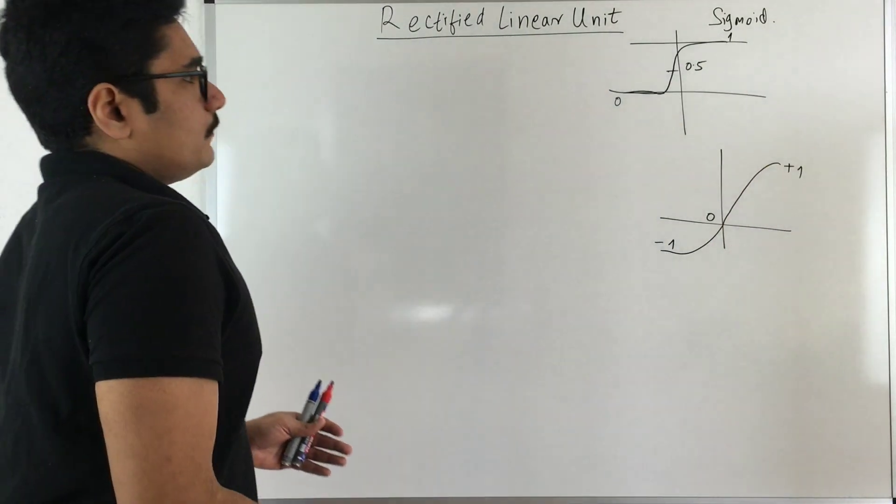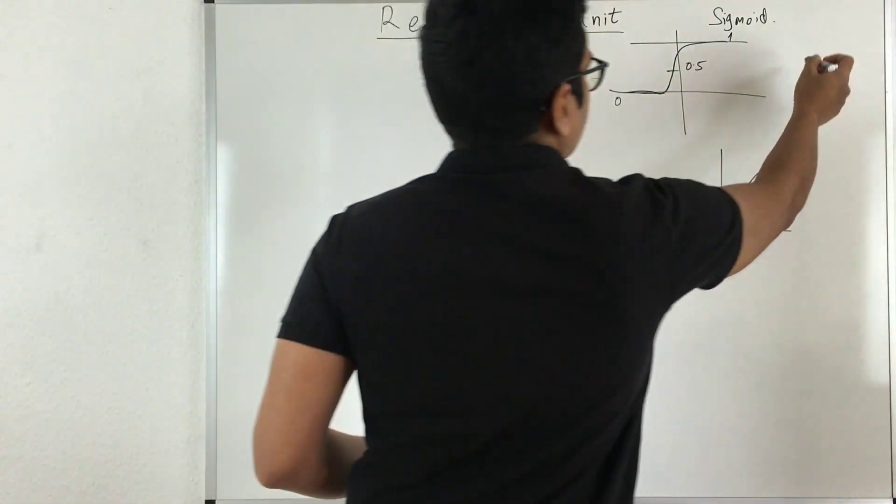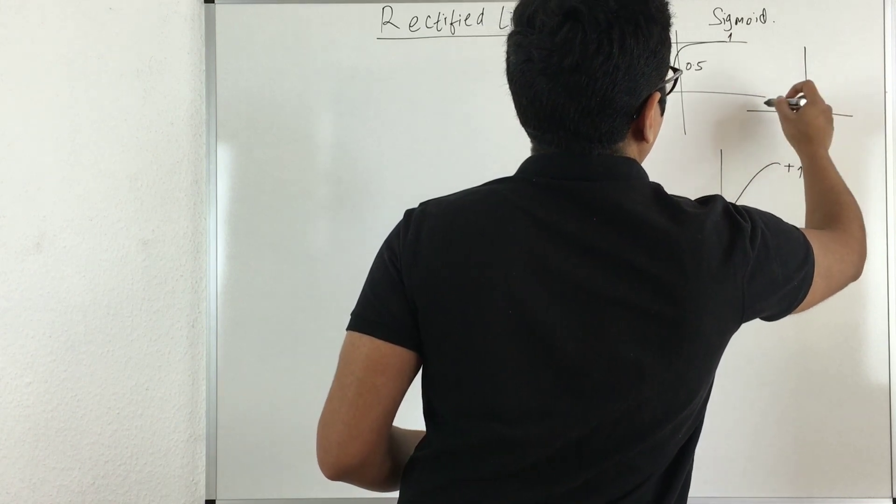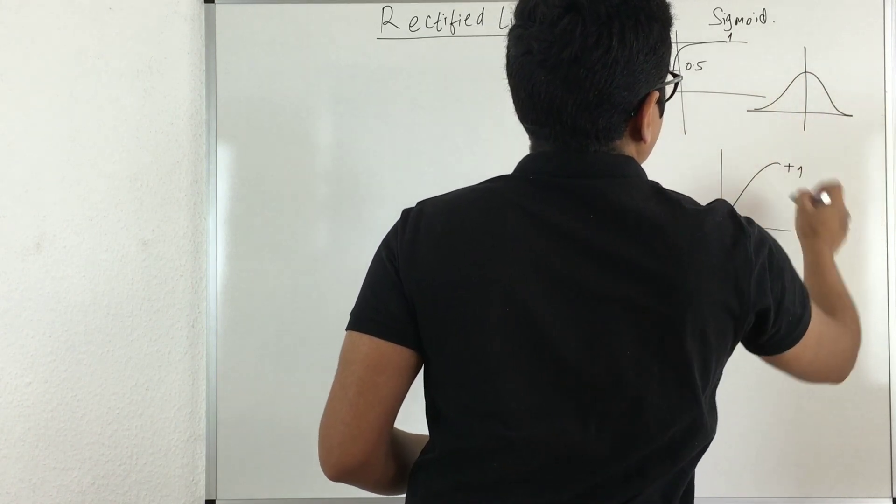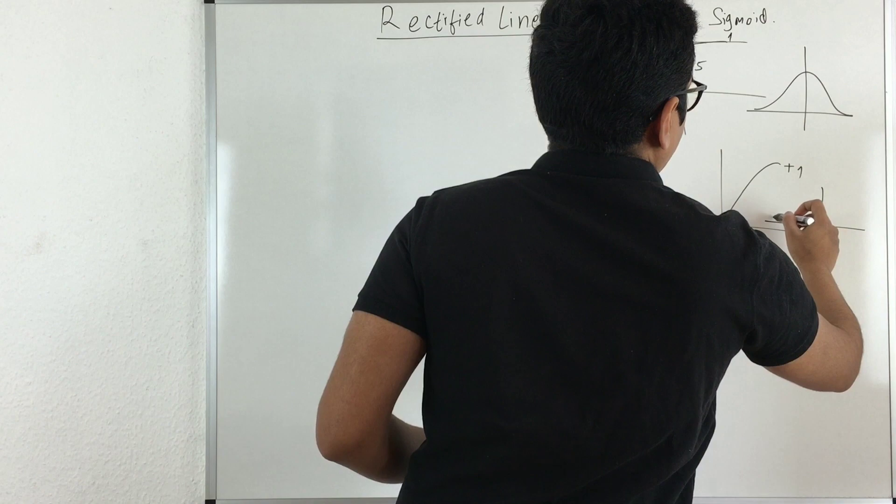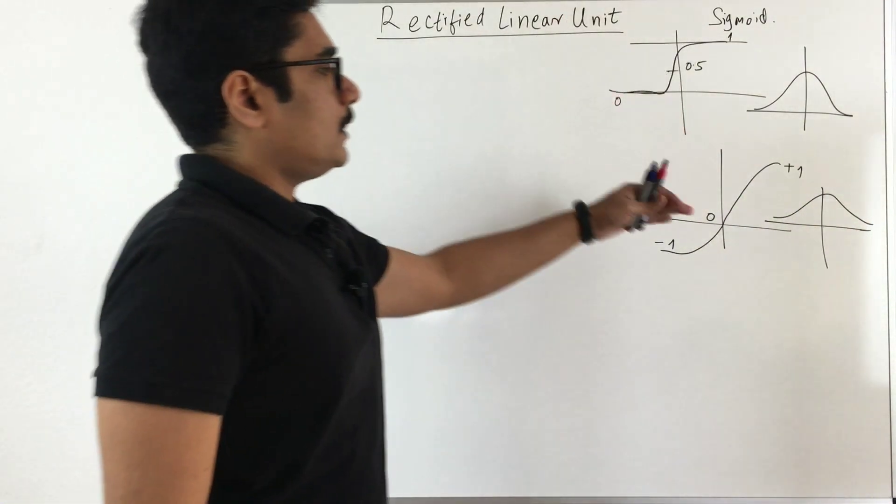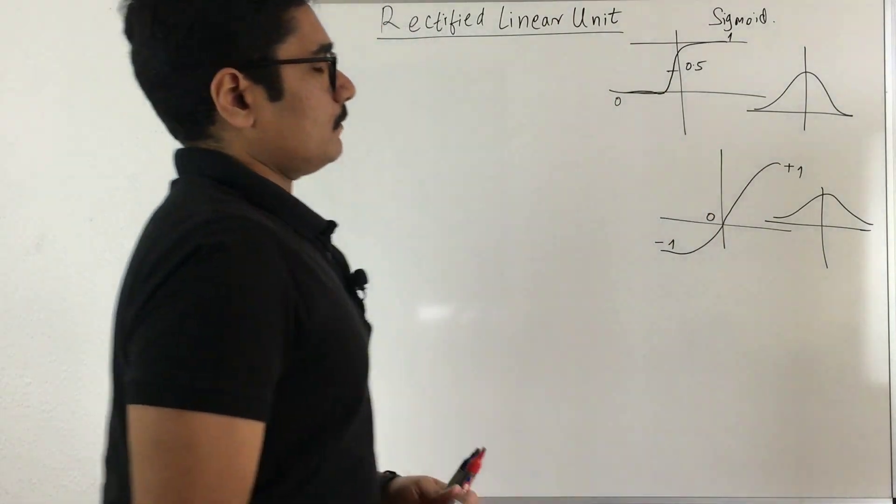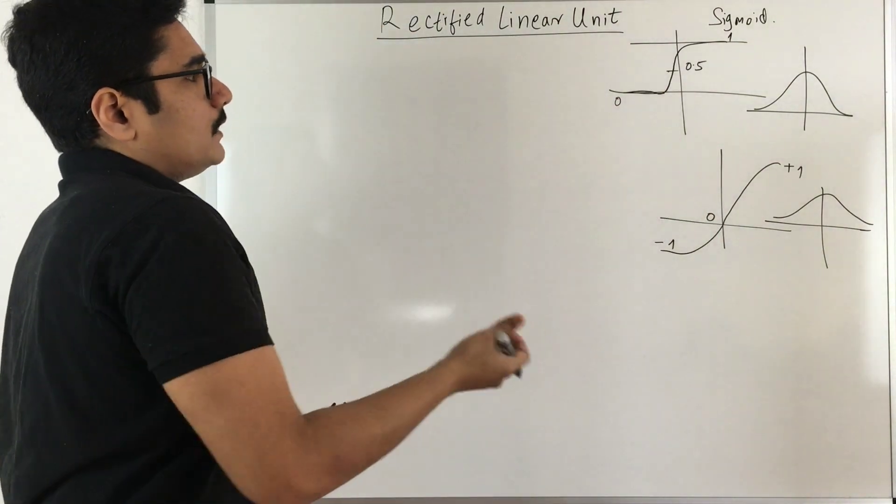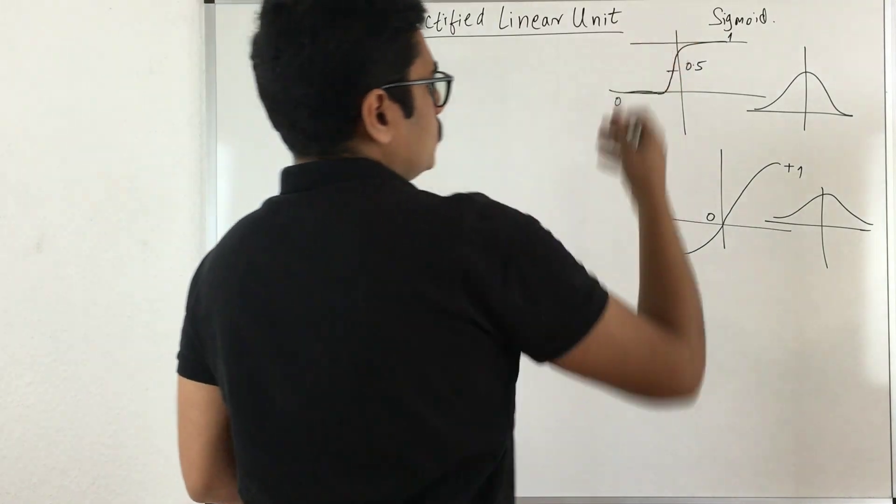And then what we did is we took the derivative of this. So the derivative of this looks something like this. You had a function and we obtained similar kinds of graphs for the differential for these particular activation functions.